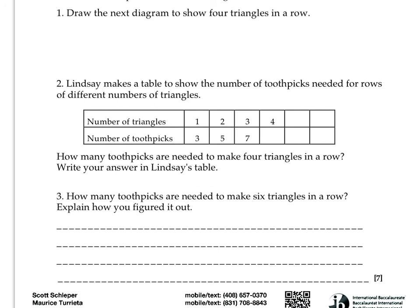So if you want one triangle, it's three sticks. Two triangles is five. Three is seven. Four, you're going to have to fill in your value here. Five, whatever you think your value is, six, and the value of the number of toothpicks to make six triangles in a row. How many toothpicks are needed to make four triangles in a row? So then you answer that here. Write your answer in Lindsay's table, so you put that there.